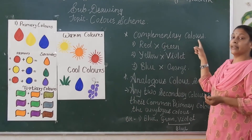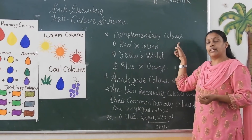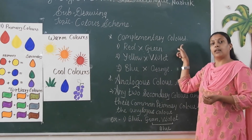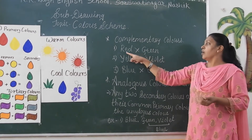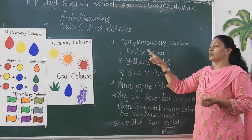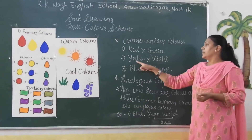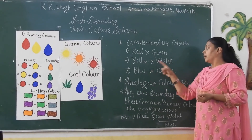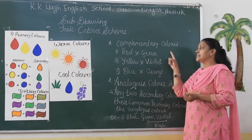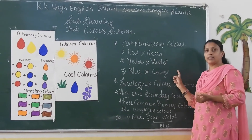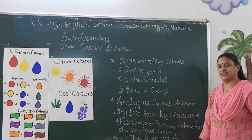Next are the complementary colors. What do we mean by complementary? Complementary colors means contrast colors — colors that are opposite to each other, such as red and green, yellow and violet, blue and orange. These are the contrast color schemes we call complementary colors.